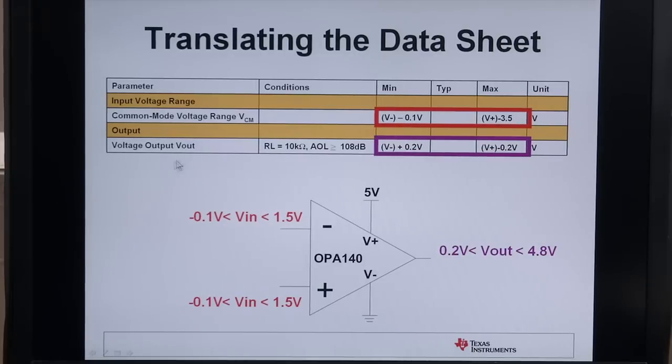The output swing is given here and it's the same kind of method relative to the supplies. In this case the negative supply plus 0.2 is 0.2 and the positive supply minus 0.2 is 4.8. Going below 0.2 or above 4.8 will cause the output to be non-linear or clipped.